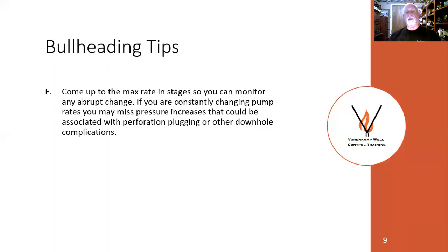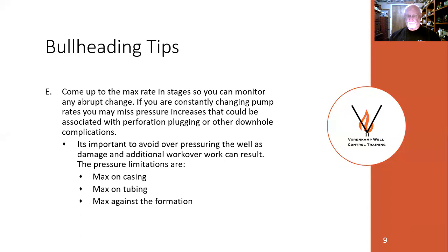Come up to that maximum rate in stages — don't just crank it up. Abrupt changes can cause abrupt changes downhole. If you're constantly changing pump rates, you might miss changes downhole that could be detrimental, or miss plugging. Find that rate and watch it closely until you get to that 80 to 85 percent volume pumped, then slow it down and watch for plugging. It's really important not to overpressure the well more than you need to in bullheading — it can result in a lot more work and headaches if done wrong.